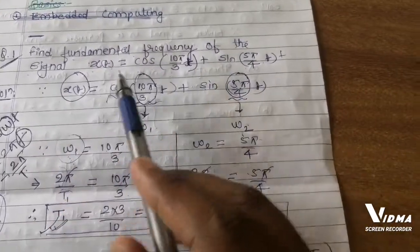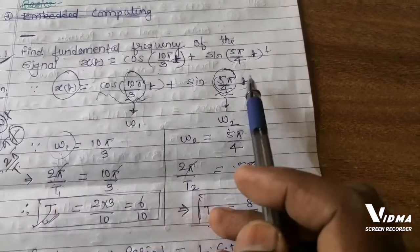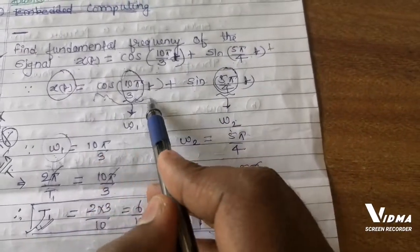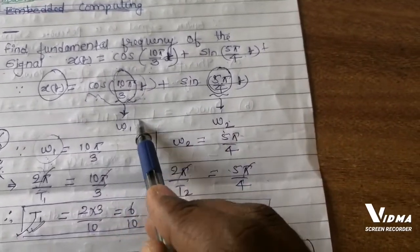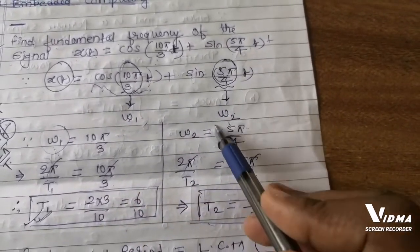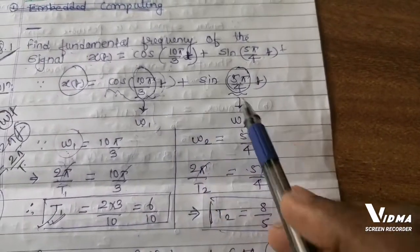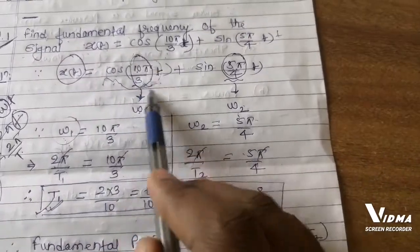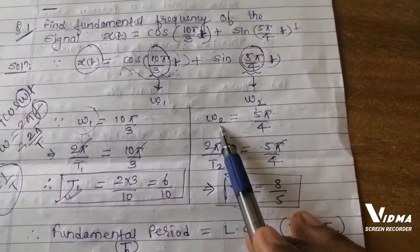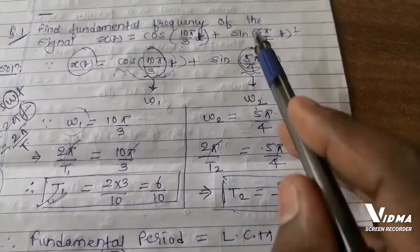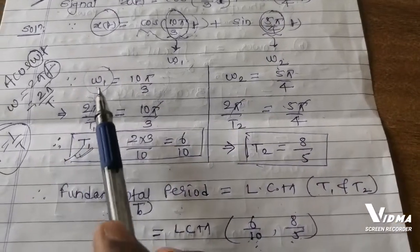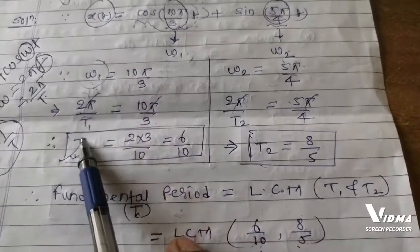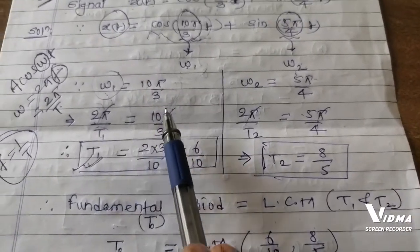Let us see how to solve it. Since x(t) is given, the coefficient of t in the cosine term is omega. I have named it omega 1, and the coefficient in the sine term is omega 2. So we have omega 1 equals 10π/3 and omega 2 equals 5π/4.